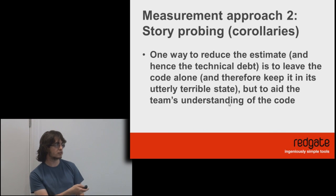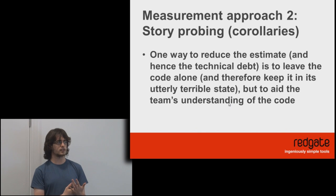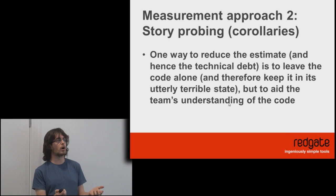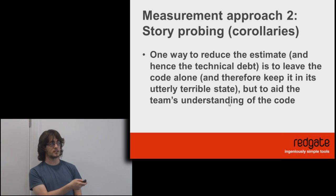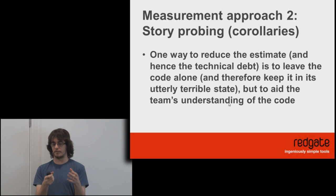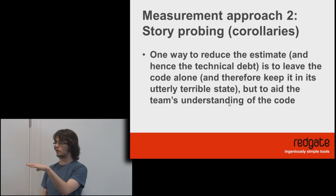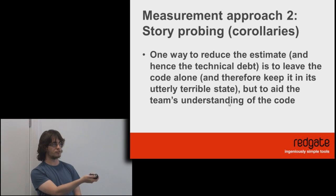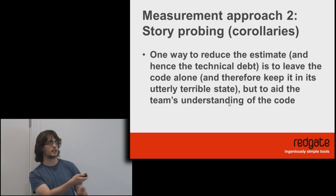There are some interesting corollaries with this approach. The first is that to reduce technical debt, you don't actually have to make the code any better. If you can increase the team's understanding of the code — maybe there's an abstraction layer that's too leaky — if the team's understanding increases, the technical debt is reduced. This encompasses the fact that if you replace your software developers with another set, they lose their inbuilt mental model and technical debt goes up. So keeping the team stable over time means technical debt is essentially lowered.